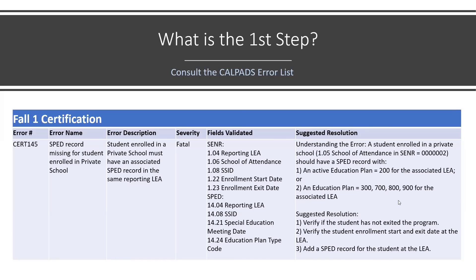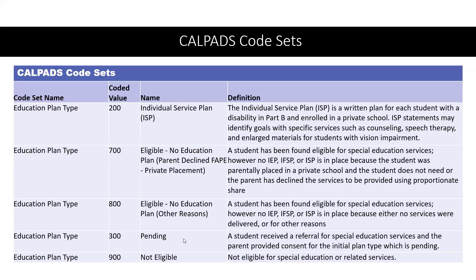Those are also described in the code set. Code 300 is pending — the student has been referred. You should not be penalized with a fatal error if the student's record is pending, but you should denote that and submit the record to CALPADS. Code 700 is no education plan — the parent declined FAPE. Code 800 means the student was found eligible but still has no education plan for other reasons. Code 900 means the student is not eligible. So we see the acceptable education plan type codes that will resolve the error if we submit a record.